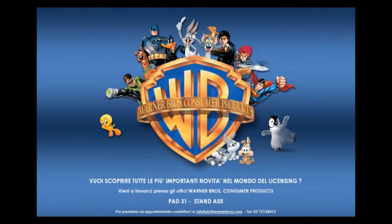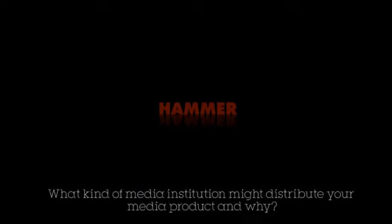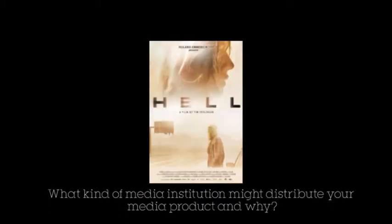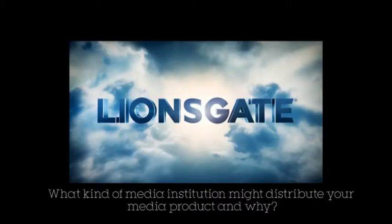We thought about the genre of our film being a crime thriller and what genres of films other film institutions are well known for. We looked at Hammer Films, which is a smaller-based media institution widely known for their films in horror and thriller. We also looked at 20th Century Fox, but soon realised they had filmed mainly comedy and home family movies. However, some of their film experience covers thriller and horror genre too, with films such as Jennifer's Body and Hell, but we found it hard to find a film that came under the sub-genre of crime thriller.